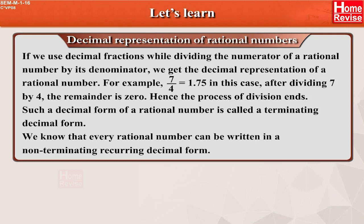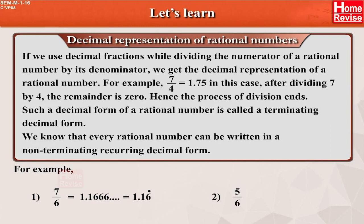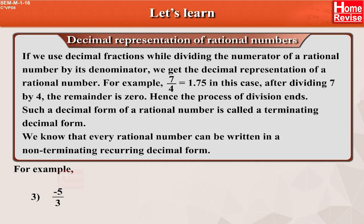We know that every rational number can be written in a non-terminating recurring decimal form. For example: 7 upon 6 is equal to 1.1666... which is equal to 1.16 recurring. 5 upon 6 is equal to 0.8333... which is equal to 0.83 recurring. Minus 5 upon 3 is equal to minus 1.666... which is equal to minus 1.6 recurring.